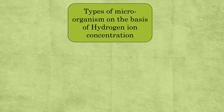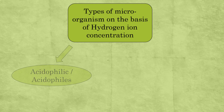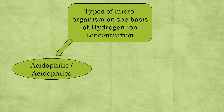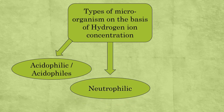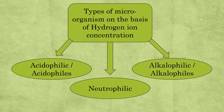On the basis of hydrogen ion concentration, microorganisms are categorized into three types: acidophilic (acidophiles), neutrophilic (neutrophiles), and alkalophilic (alkalophiles). Let's look at each one.